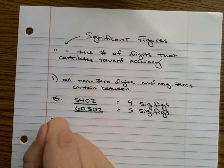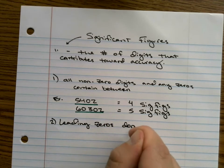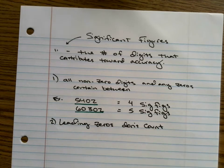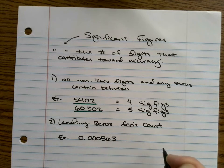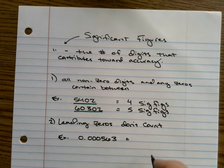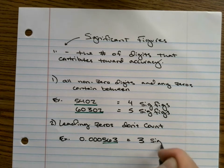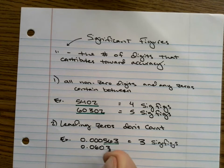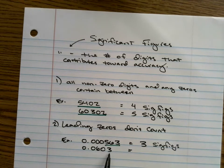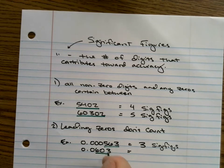Two. Leading zeros don't count. They're not significant. Now let me give you an example. If we have 0.000563 as our measurement, there is only three sig figs. Let's do another one. We have 0.0603. We have two non-zero digits. And then we have one that's trapped inside, but these zeros don't count. So the only significant figures are these three.